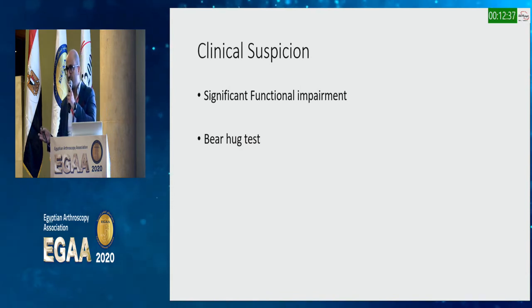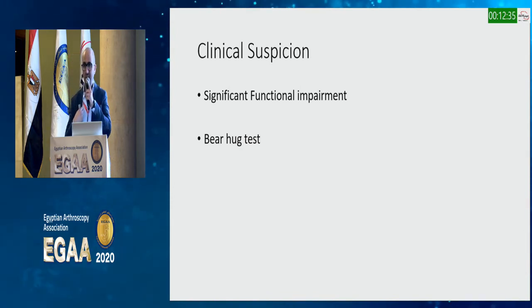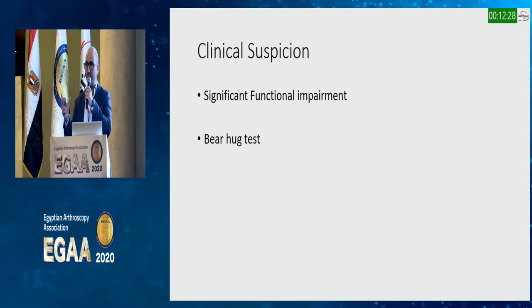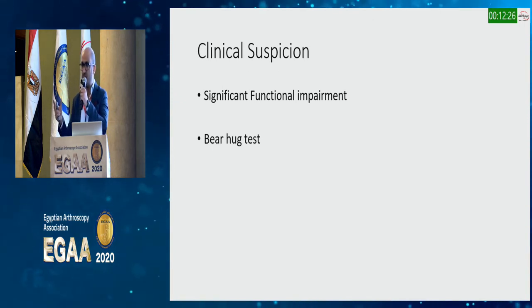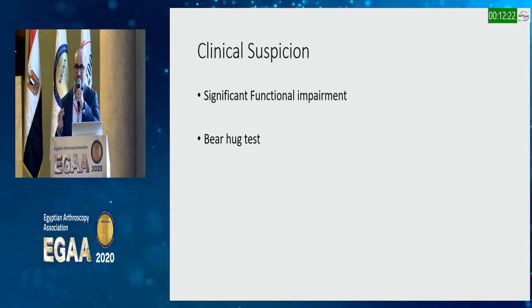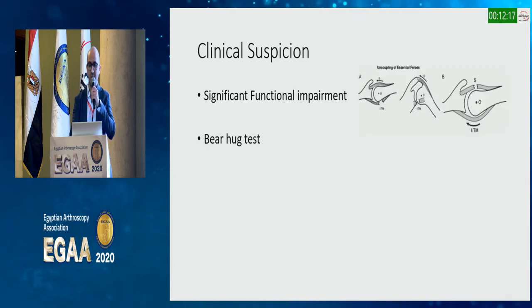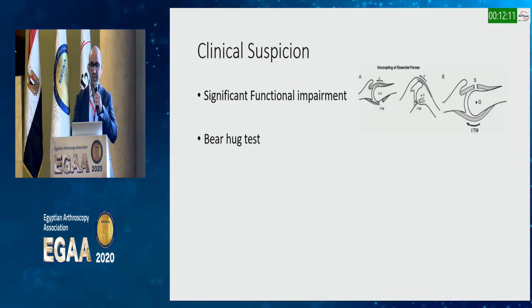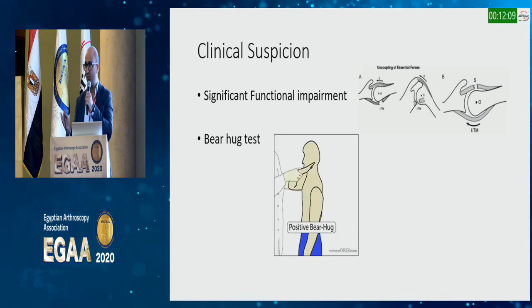There are many tests for subscap tears. Two important clinical clues: if a patient has significant functional impairment that doesn't really correlate to the tear size — for example, a small supraspinatus tear but the patient is clinically impaired and in severe pain — I would suspect a subscap tear because something is wrong with the force coupling.